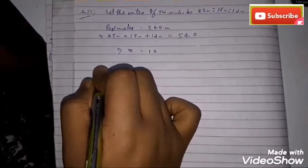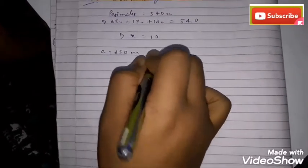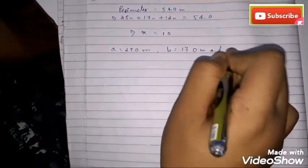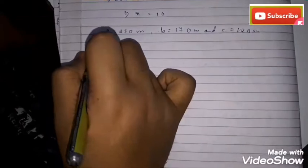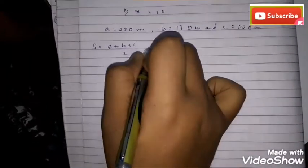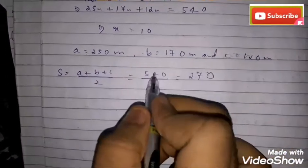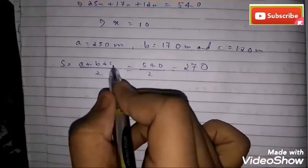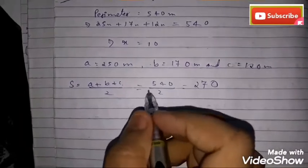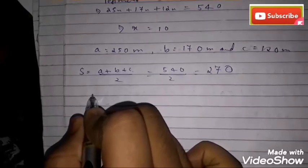The value of x is 10, so the required sides are a = 250 meters, b = 170 meters, and c = 120 meters. Now we calculate s = (a + b + c) / 2 = 540 / 2 = 270 meters. Trick: when you need s and the perimeter is given, just divide the perimeter by 2 — no further calculation needed.